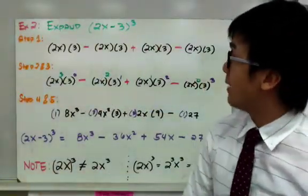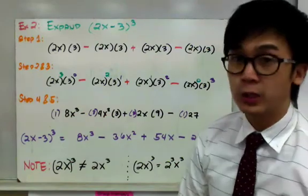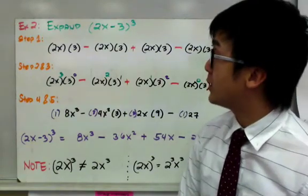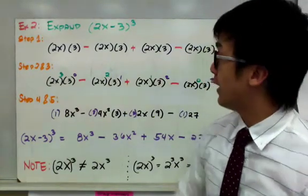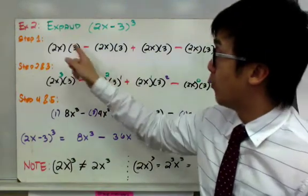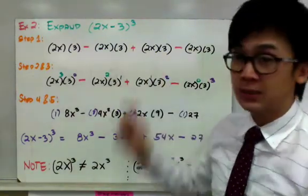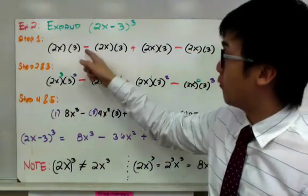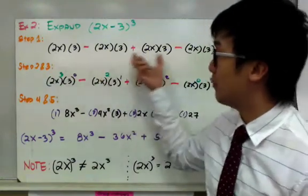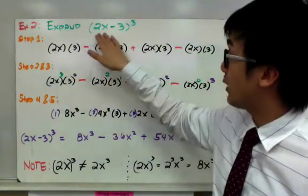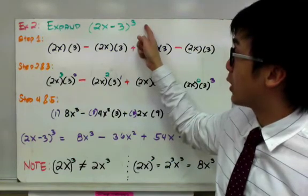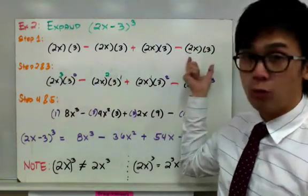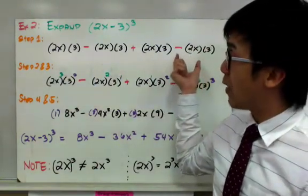For our second example, we have 2x minus 3 raised to the third power. Notice that now the operation is subtraction instead of addition. The difference is the sign of your expansion — instead of all positive signs, we're going to have alternating minus, plus, and minus for each term. Since we have a level 3 expansion, we're going to repeat our factors 1, 2, 3, 4 times.